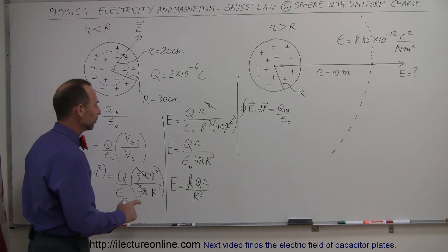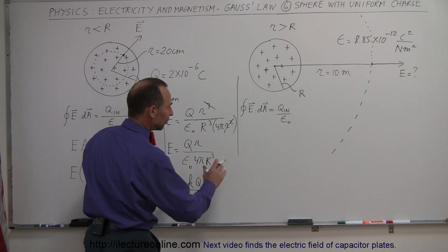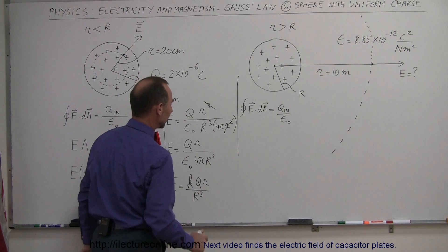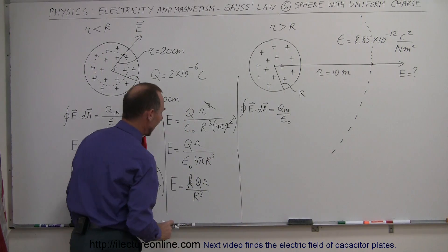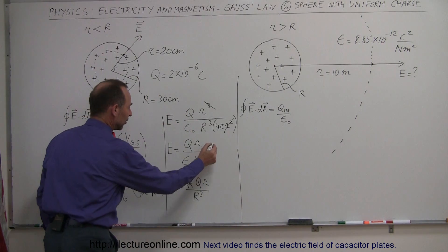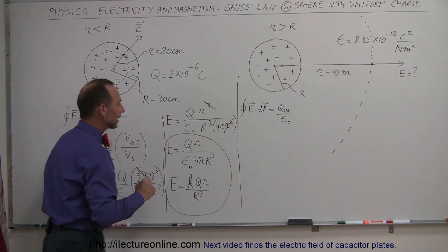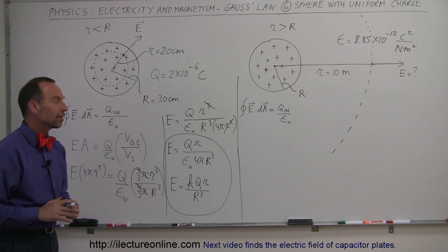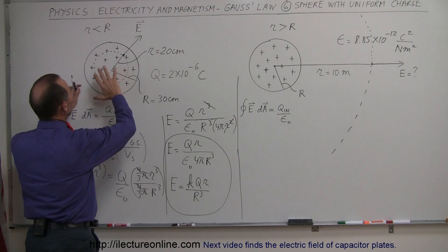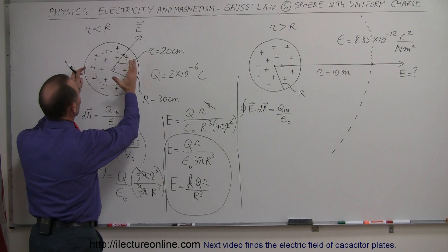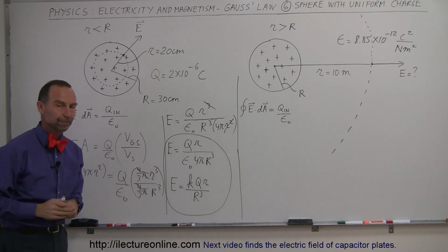This is the result for the electric field strength inside a sphere that has uniform charge distributed throughout the entire sphere. The field increases linearly with r inside the sphere.